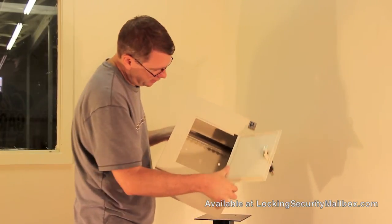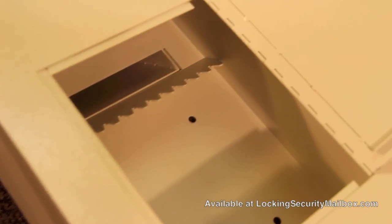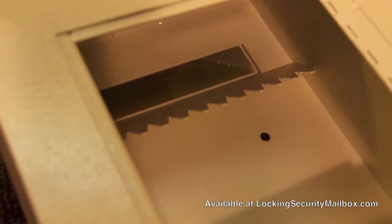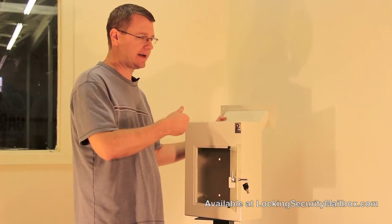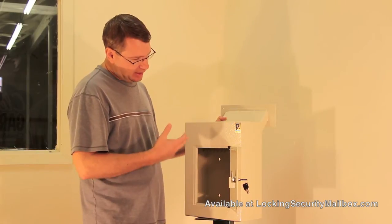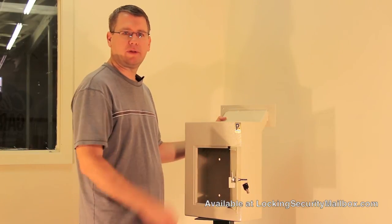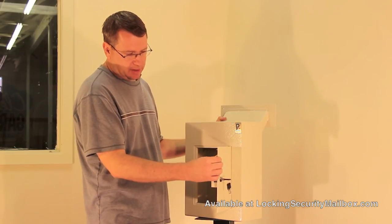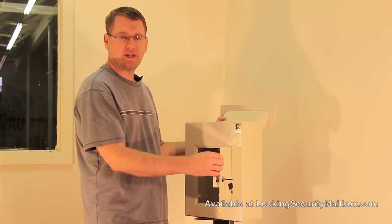You can flip this open here and it's got a sawtooth baffle and what that baffle does is it keeps or it really makes it difficult to fish items back out. Typically people try to use a coat hanger and things of that nature to get items out and that baffle really makes it difficult. The door thickness is about an eighth of an inch thick. It is reinforced.